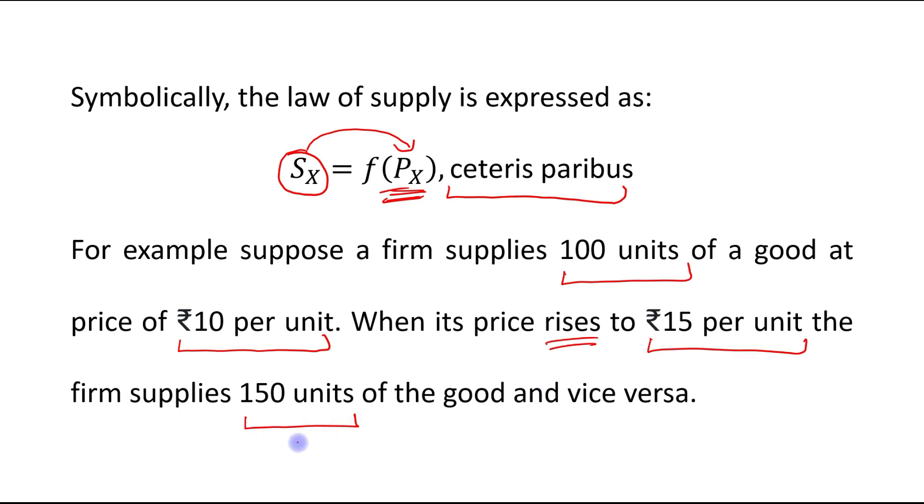Why did the firm increase its supply? Because now the firm is getting higher prices for its commodity. If it sells that commodity in the market, it will get a higher price, rupees 15 per unit.